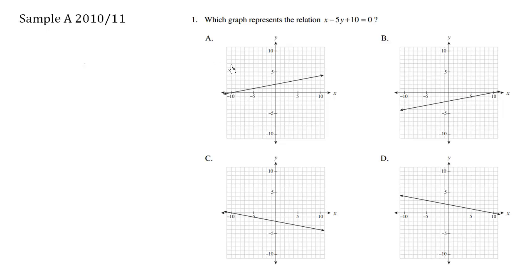Which graph represents the relation x minus 5y plus 10 equals 0? Let's rewrite this equation in the standard y equals mx plus b slope-intercept form.